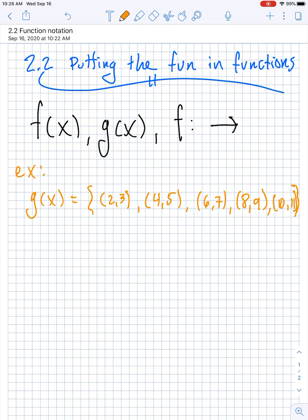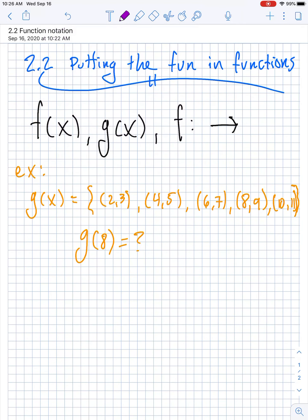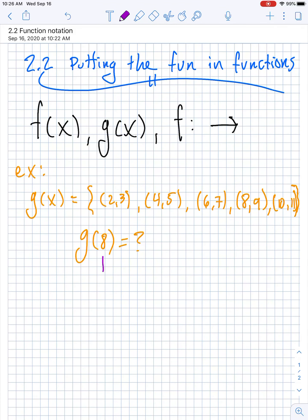If they were to ask what is g of 8, well if you look at the function, that means that this is an input of 8 getting put into g, and they want to know what the output is going to be. So if you locate the input of 8, which is right here, let's use a highlighter right here.